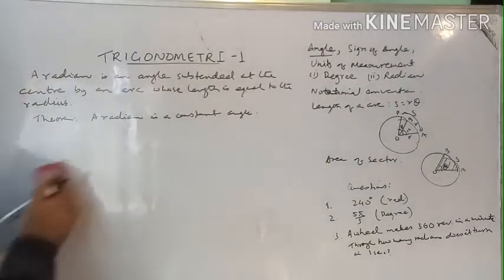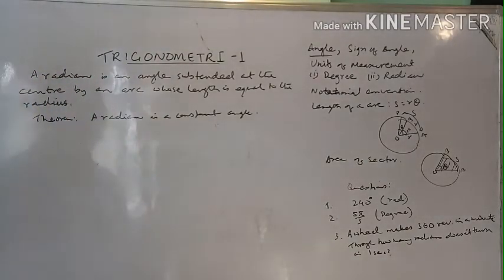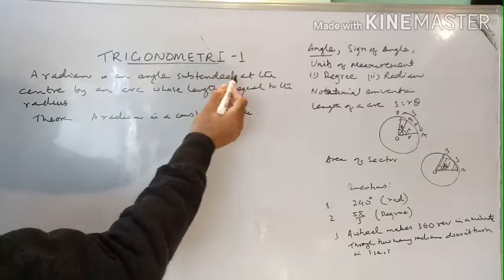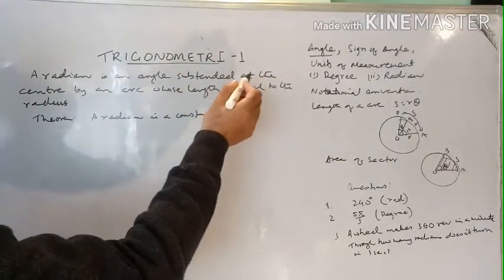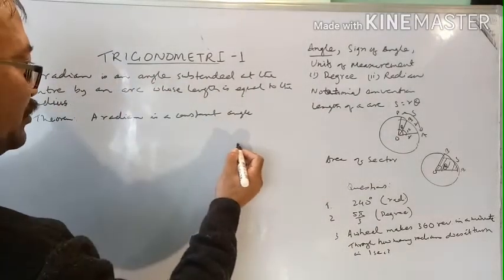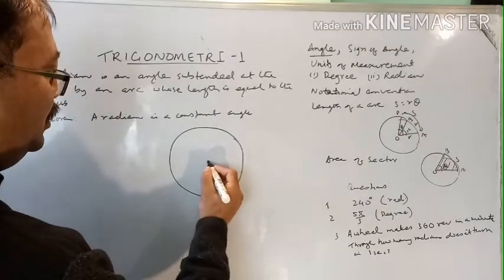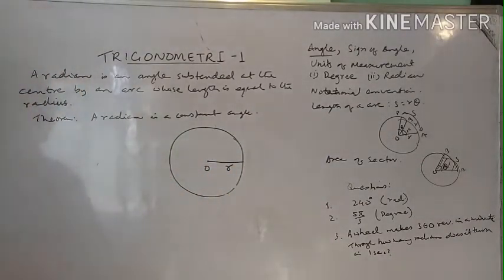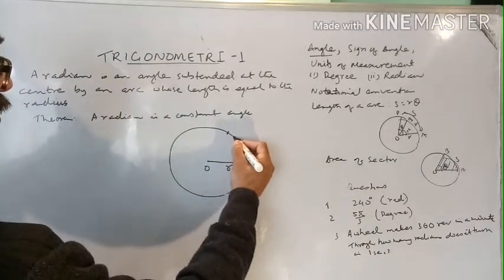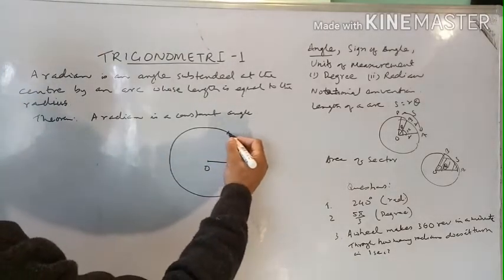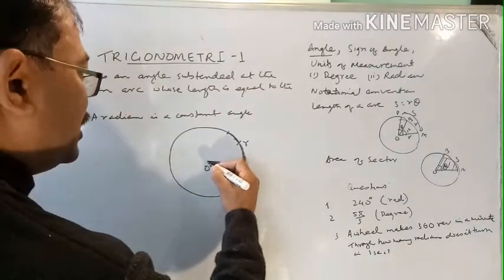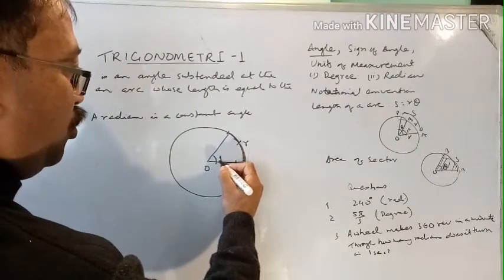Now let's understand radian measure. What is one radian? A radian is the angle subtended at the center by an arc whose length is equal to the radius. Let's understand this with a diagram. Suppose this is a circle whose center is O, and this is the radius R. If we take an arc length equal to the radius, then the angle subtended by this arc at the center is called one radian.